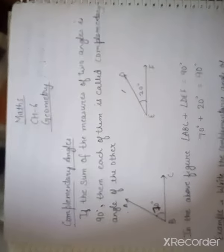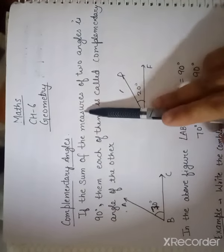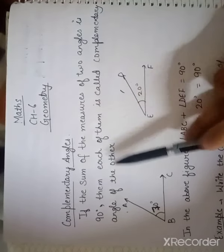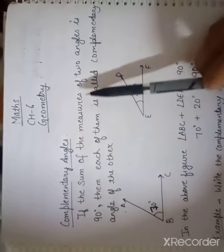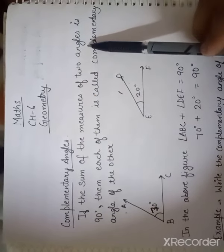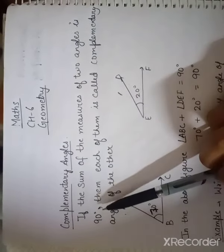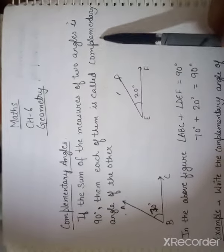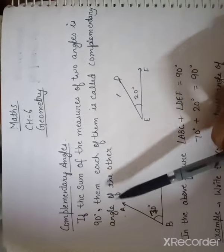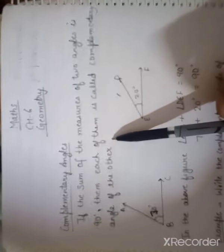In this chapter, today we are going to learn about complementary angles. What are complementary angles? If the sum of the measure of two angles is 90 degrees, then each of them is called the complementary angle of the other.